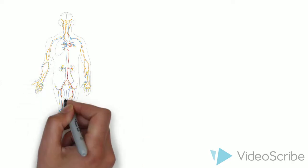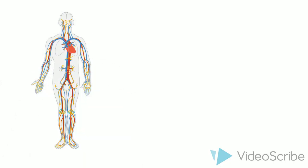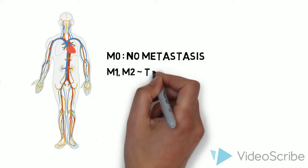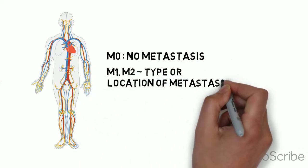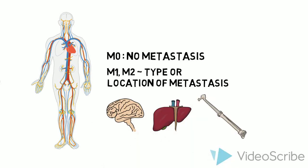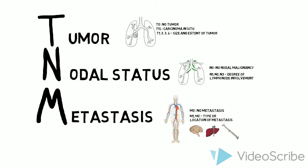M refers to the absence or presence of metastases. M0 means there is no presence of metastases. M1 and M2 may represent the type or location of metastases. This mirrors the mechanisms of cancer spread: the T stage reflects direct extent, the N stage reflects lymphatic spread, and the M stage reflects hematogenous spread or metastases.